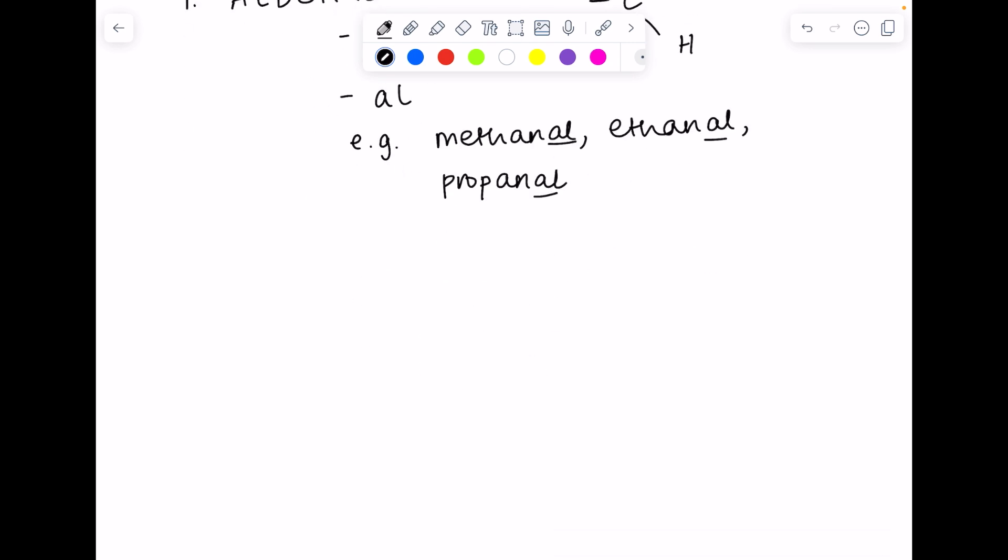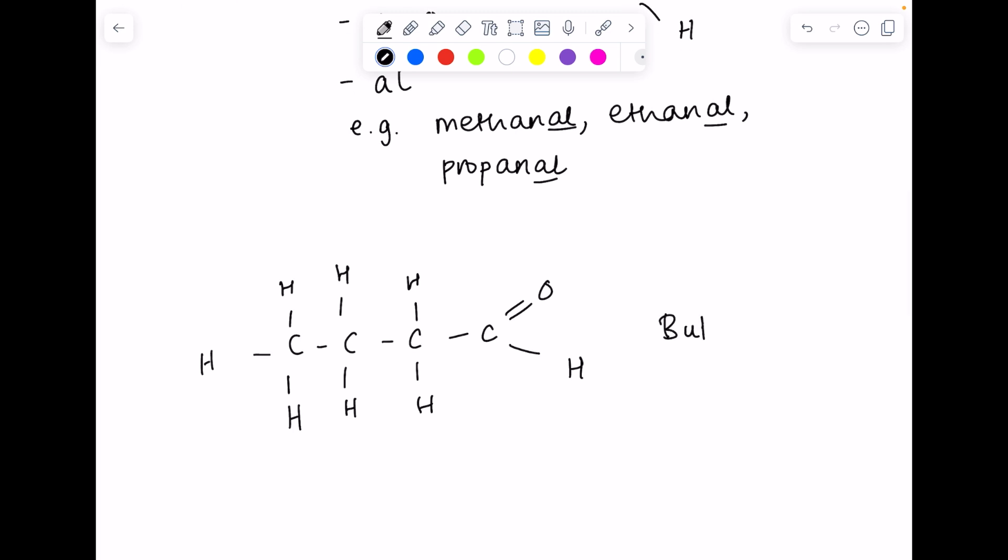I'll just draw butanal as a displayed formula to show you. But means that it has four carbons. There's the all-important aldehyde functional group, and then just complete the molecule with hydrogens. So there is butanal's displayed formula.